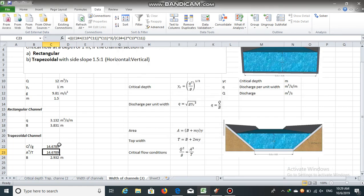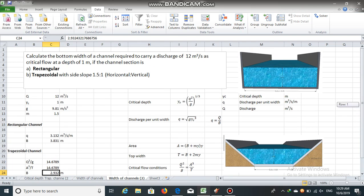The value of bottom width has been obtained. It is equal to 2.932 meters. So the bottom width of a trapezoidal channel section is 2.932 meters and that of the rectangular section is 3.831 meters.